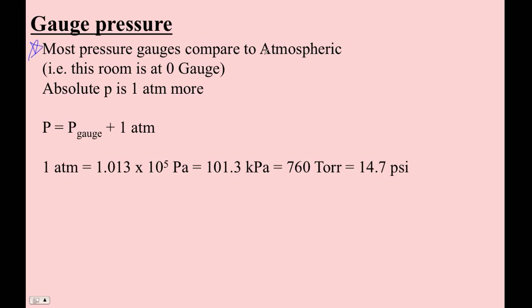If it reads a positive number, that means it's more than an atmosphere, and if a gauge reads negative pressure, then it means that the pressure it's reading is less than an atmosphere.